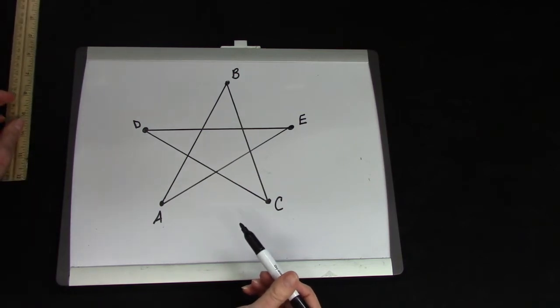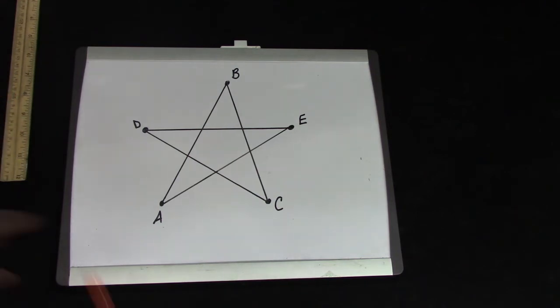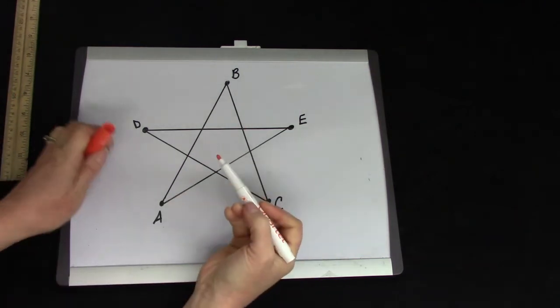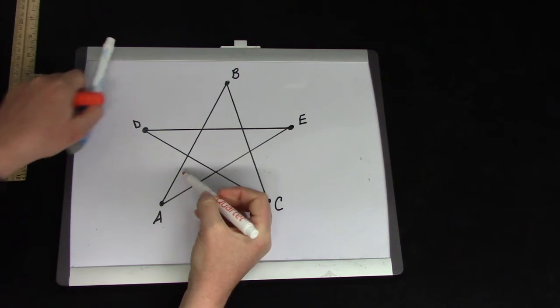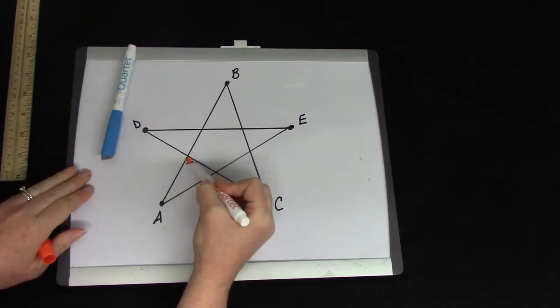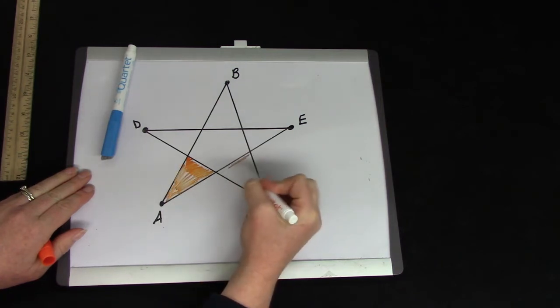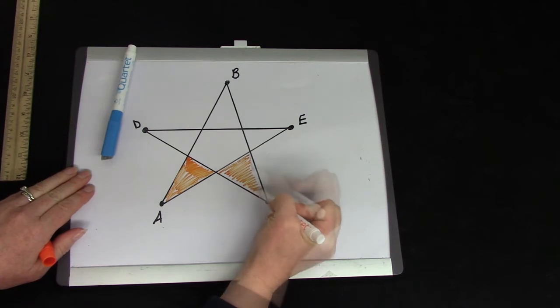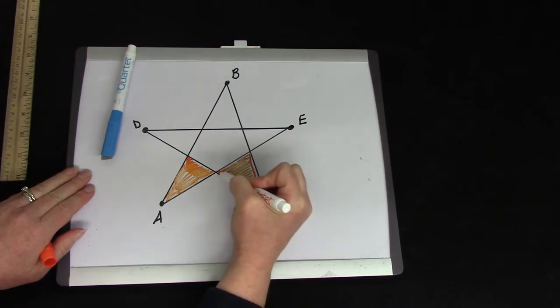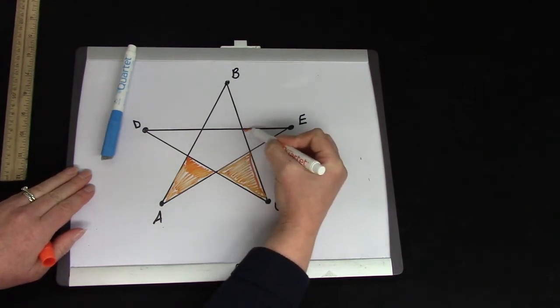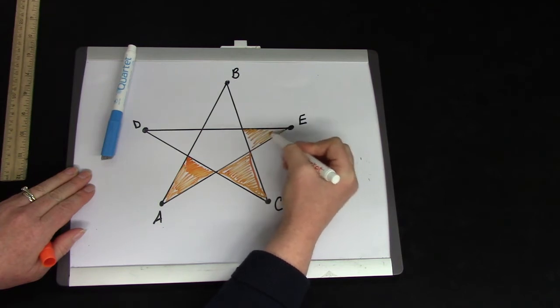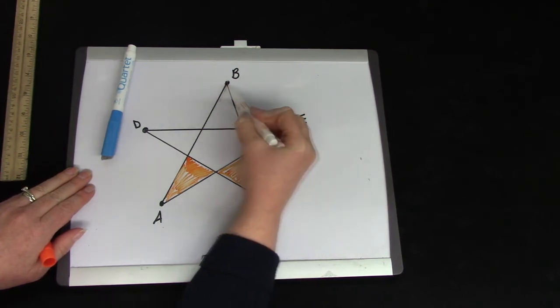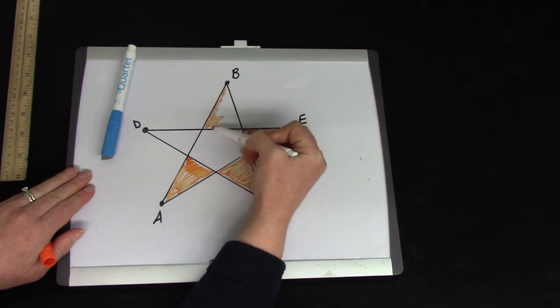I think I want to color my star. I'm going to color all of the triangles orange. Oh, do you hear my squeaky marker? My triangles have three sides. One, two, three. My triangles also have three angles. One, two, three. How many triangles does my shape have?